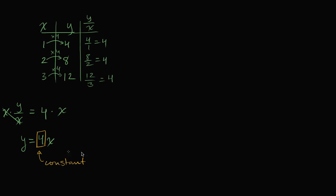Sometimes people will say proportionality constant, or constant of proportionality. Now sometimes it might even be described as a rate of change. You might wonder how four would be a rate of change — to make that clearer, let me do another example, but this time with actual units.